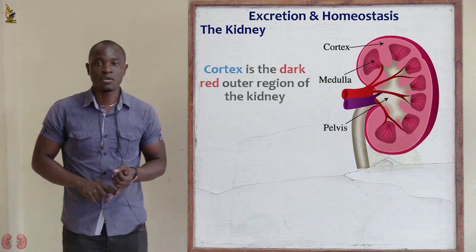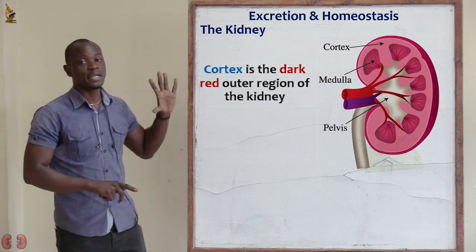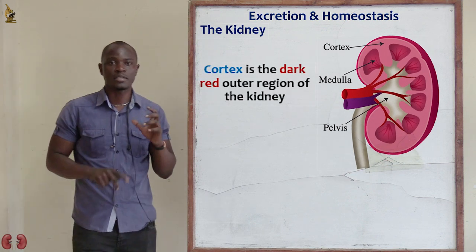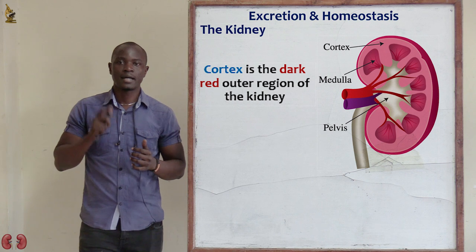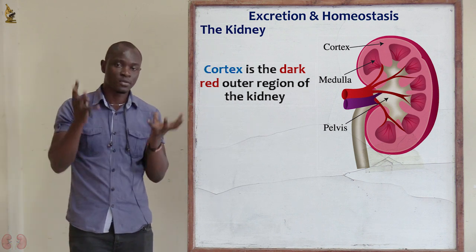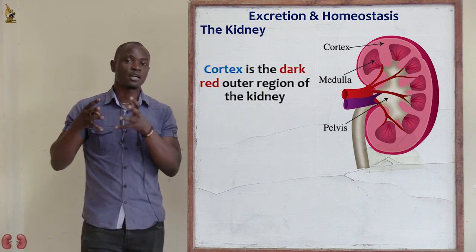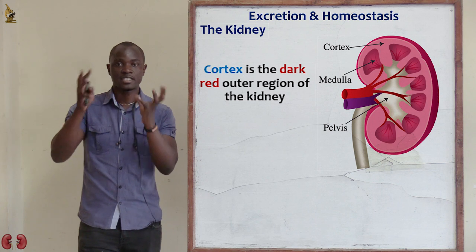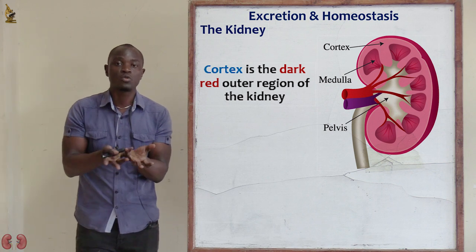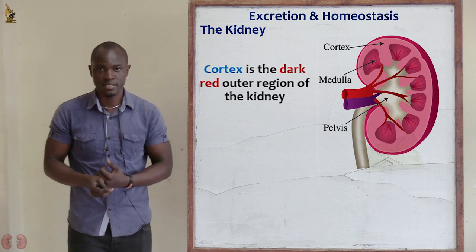Beginning with the cortex, we see that dark red colored region found on the outside of the kidney. That dark red outer region forms the cortex.